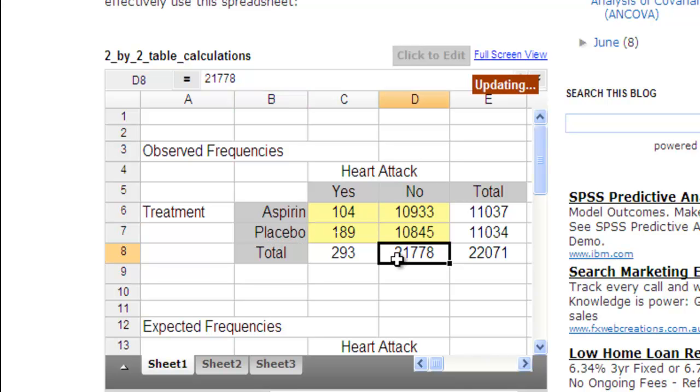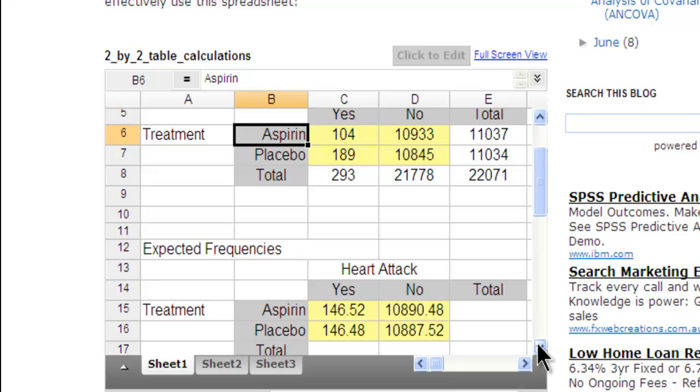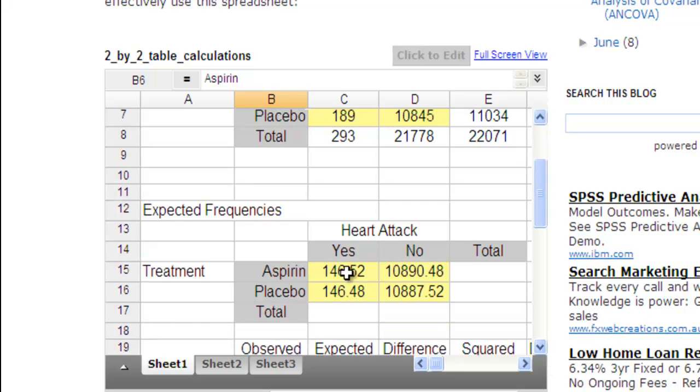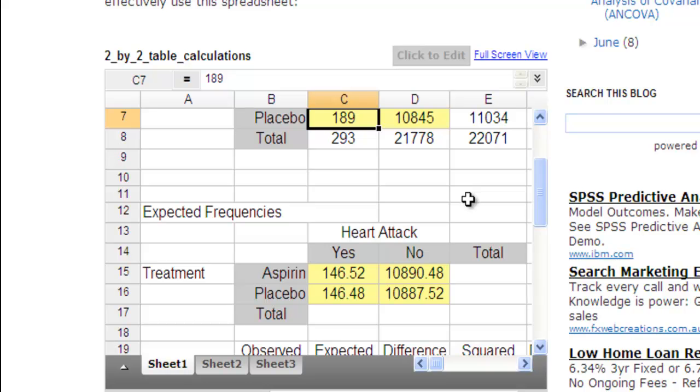And the hypothesis is that there will be an association between taking placebo versus aspirin and the number of heart attacks you get. Looking at the observed variables, you can't really see much of an expected effect. And then we've got over here the calculations associated with the expected frequencies. So this is done automatically. So if I change this to 3000, it will change automatically.